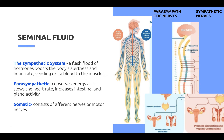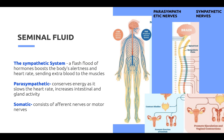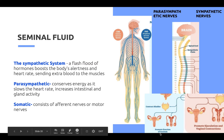The three nervous systems involved are: the sympathetic system, which is a flash flood of hormones that boosts the body's alertness and heart rate, sending extra blood to the muscles; the parasympathetic system, which conserves energy by slowing heart rate and increasing intestinal and gland activity; and the somatic system, which consists of afferent and motor nerves.